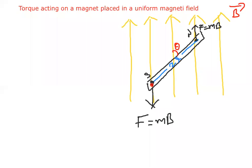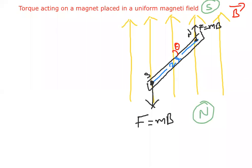Since it is a uniform magnetic field, the magnetic field B is the same everywhere — here at south pole and here at north pole. The magnetic length is 2L. South pole always experiences force opposite to the magnetic field; north pole experiences force in the same direction.